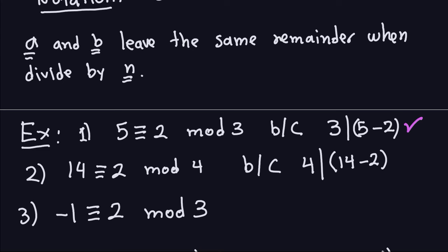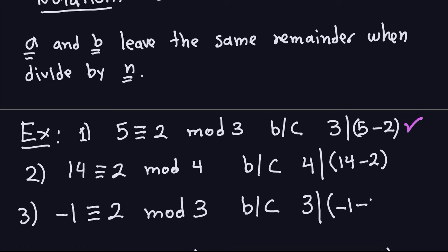The next statement says negative 1 is congruent to 2 modulo 3. For this to be true, 3 should divide negative 1 minus 2. Negative 1 minus 2 is negative 3, and 3 divides negative 3, so this is true. So all three statements are true: 5 is congruent to 2 modulo 3; 14 is congruent to 2 modulo 4; and negative 1 is congruent to 2 modulo 3.